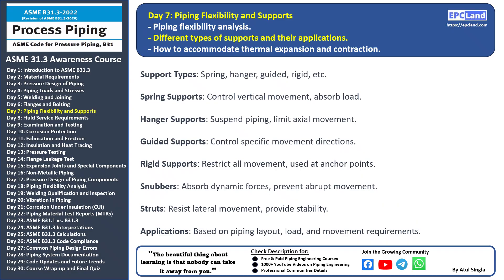Hello and welcome back to our 30-day beginner course on ASME B31.3. Today we're diving into different types of supports and their applications. Supports play a critical role in maintaining the stability and integrity of piping systems. There are various types of supports used in piping systems including spring, hanger, guided, rigid, snubbers, and struts.